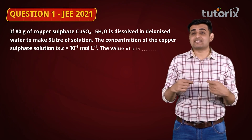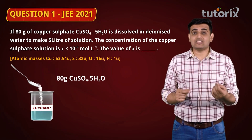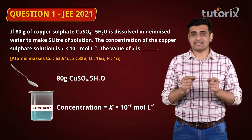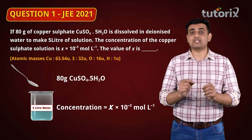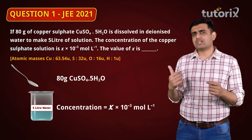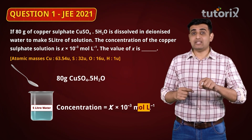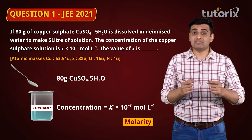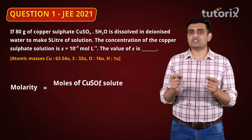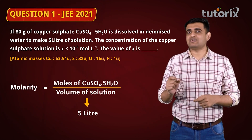In this question, it is given that 80 grams of hydrated copper sulphate is dissolved in water to make a 5-litre solution, and the concentration of the solution is x × 10⁻³ moles per litre. We have to find the value of x. The concentration value is in moles per litre, which means they are talking about molarity. Molarity equals the number of moles of solute (copper sulphate) divided by the total volume of the solution, which is 5 litres.